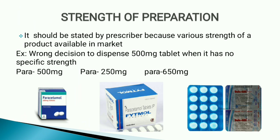Strength of preparation should be stated by the prescriber. It is essential when various strengths of a product are available in the market. For example, it would be the wrong decision for a pharmacist to dispense a 500 mg tablet when a prescription is received with no specific strength. Paracetamol is available in 500 mg, 250 mg, and 650 mg. If the prescriber has not mentioned any strength, we must contact the physician to get clarification before dispensing.